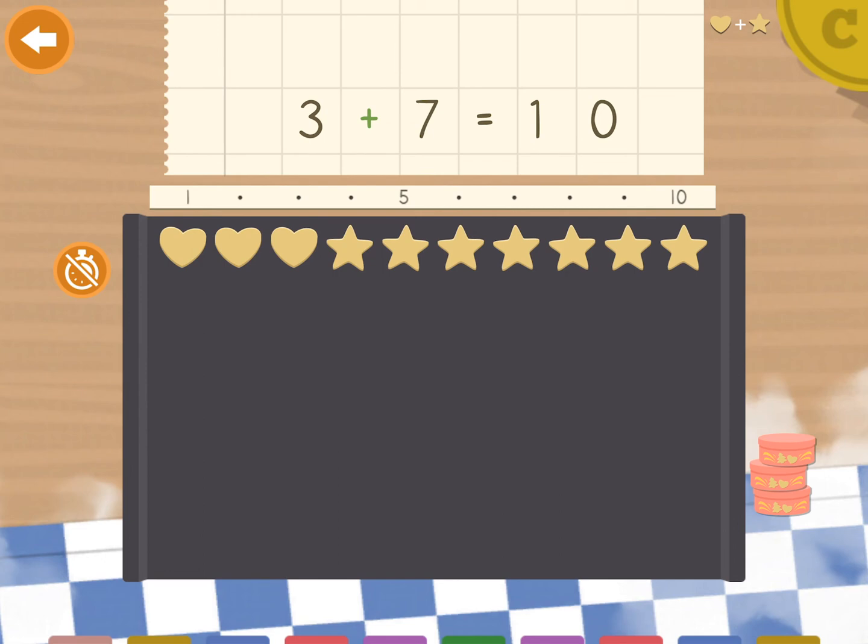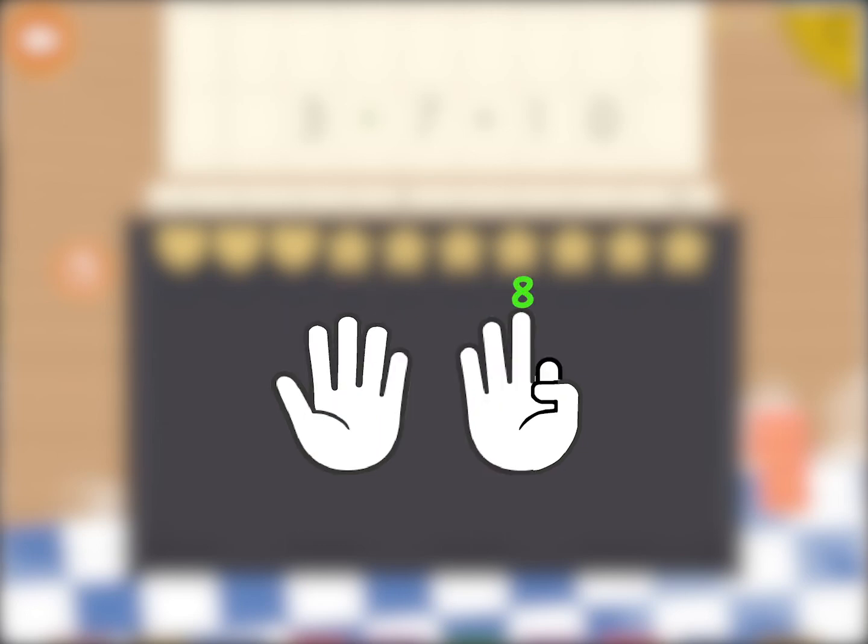But why do we write ten this way, with a one and then a zero? Now I will explain why. If you count on your fingers and start with one for the first finger, you will finally get to nine. Then the digits end. There are no more of them. But we have ten fingers. So what shall we do? We start all over, with the number one again. And to distinguish it from the first one we used, we put a zero after. So this is why we write the number ten the way we do.